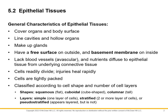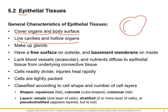Epithelial tissue covers organs and body surfaces, and lines cavities and hollow organs. So if I have the stomach and a little cross section, whatever tissue is on the inside lining is going to be epithelial tissue. Even on our skin, the outer part is epithelial tissue. Epithelial tissue always has a free surface, and it makes up glands, which we'll look at later.